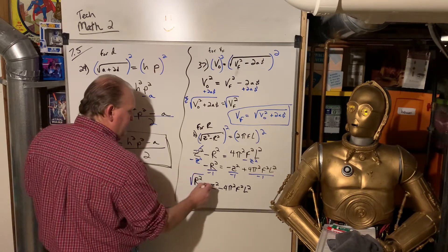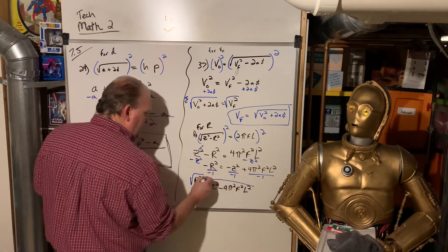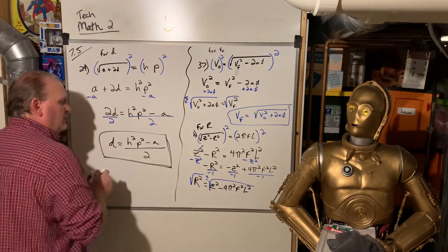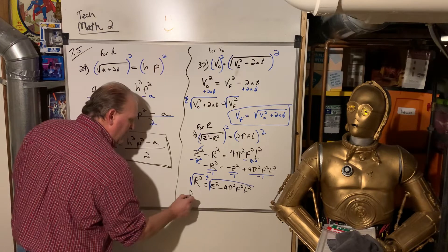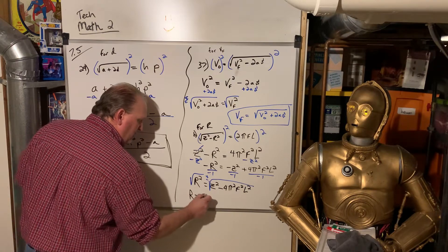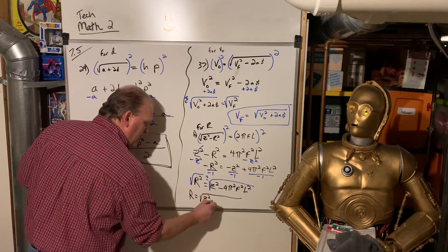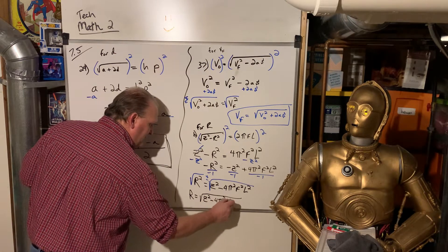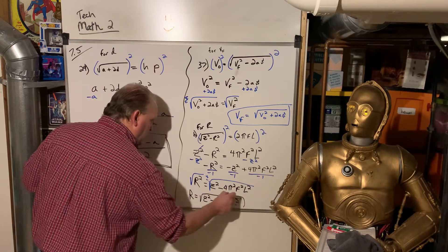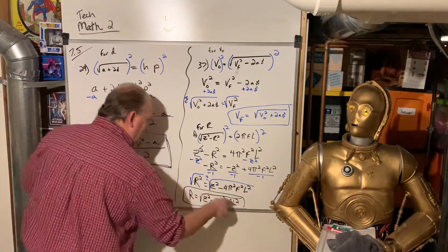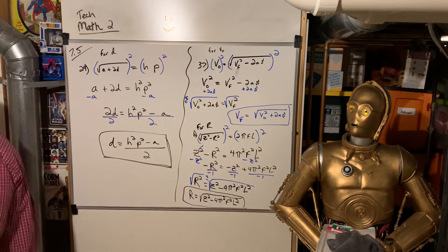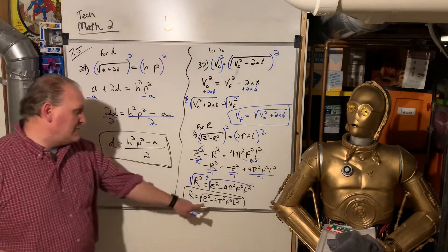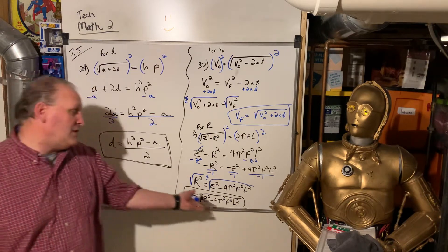So you get R squared is equal to Z squared minus 4 pi squared F squared L squared. Then we're going to do the square root. Again, there's a plus or minus, but because of the domain restrictions on the real world, it's only the positive. So we don't even worry about the negative.